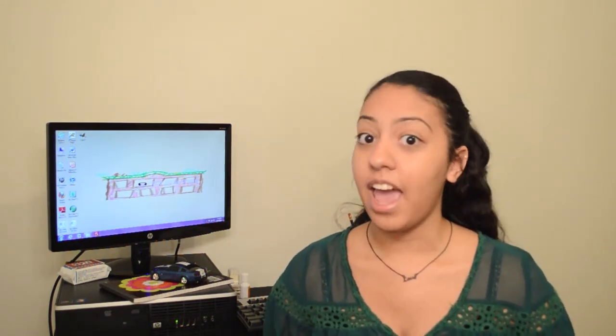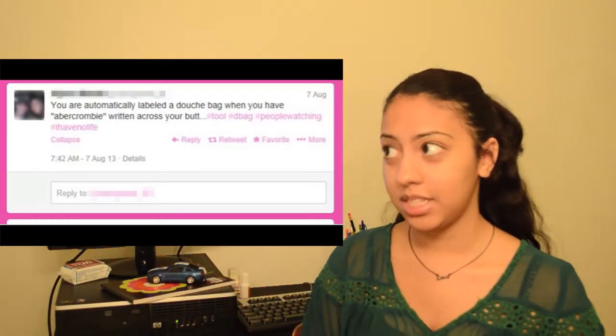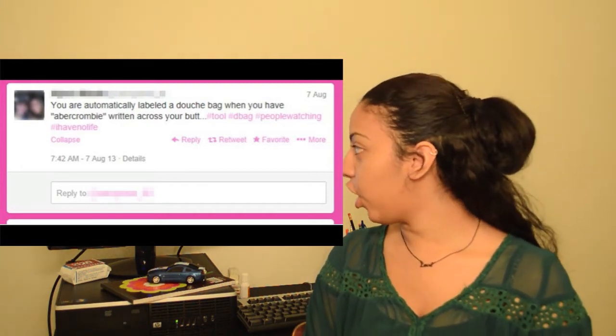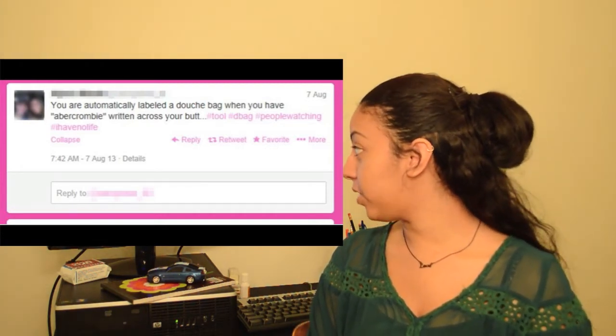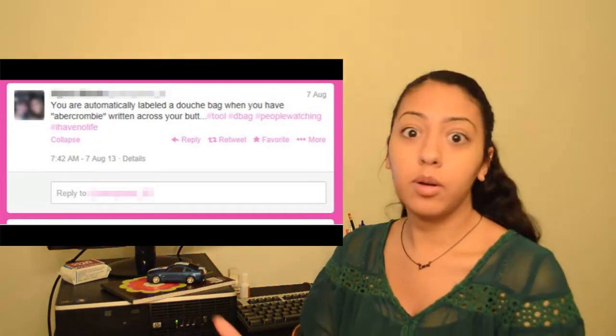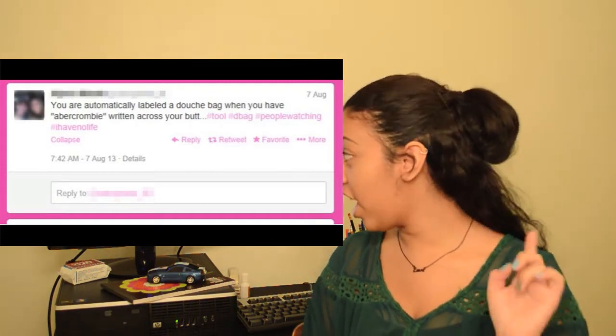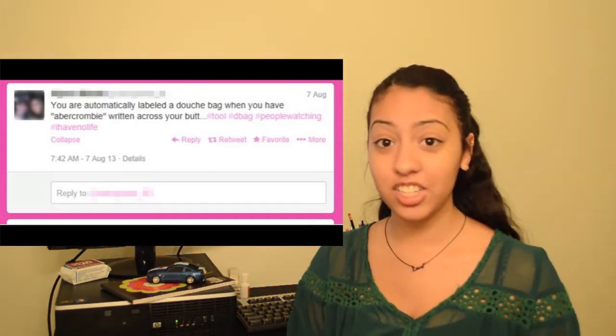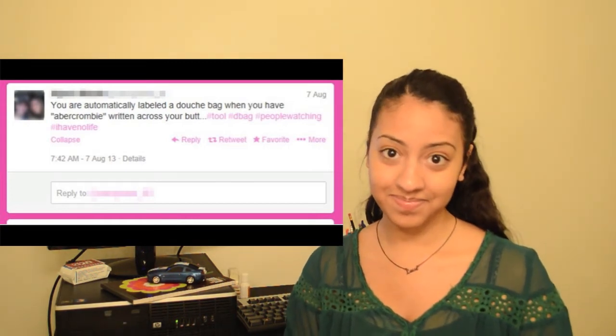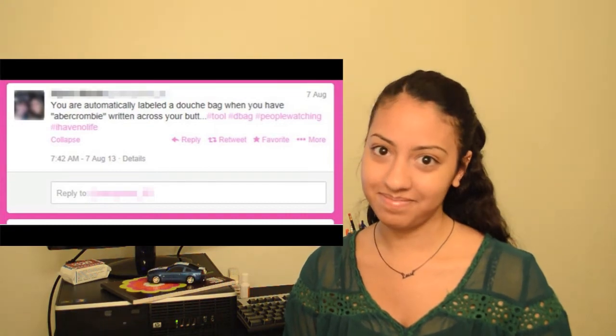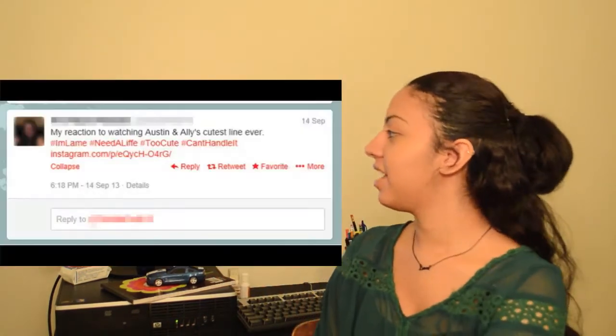I'm gonna show you them right now. So here is the first one. This is a tweet from someone who I'm not gonna name, but they said 'you're automatically labeled a douchebag when you have Abercrombie written across your butt,' which is true. Then wait a minute, they put hashtag tool hashtag D bag hashtag people watching hashtag I have no life. Are all of those necessary? Really?